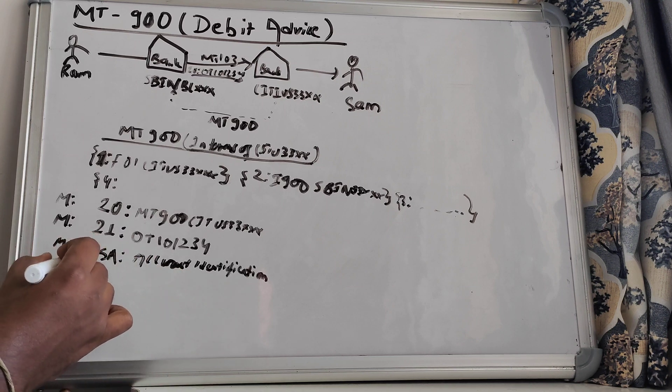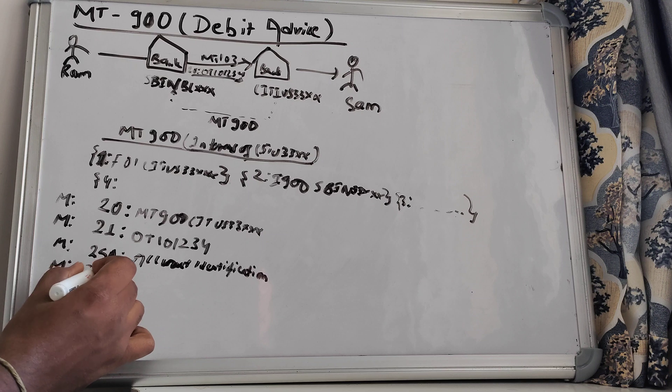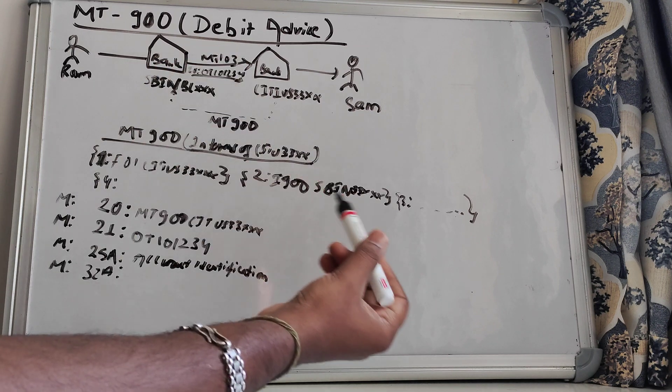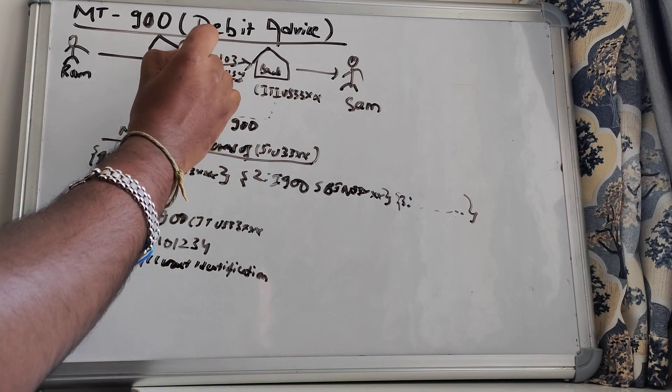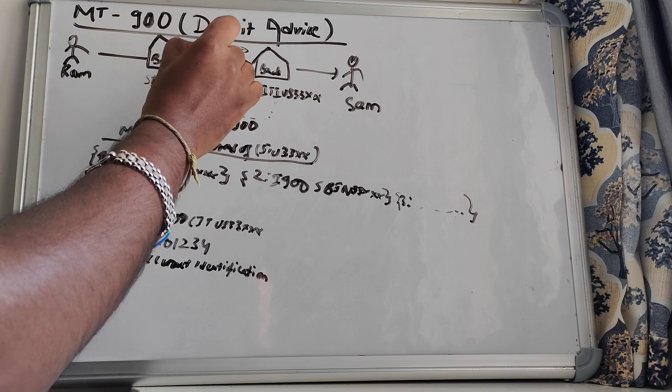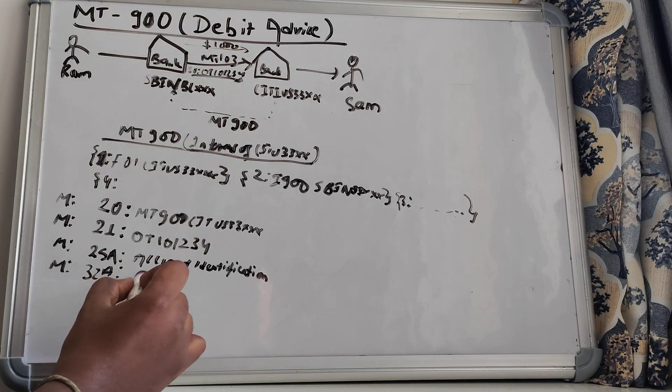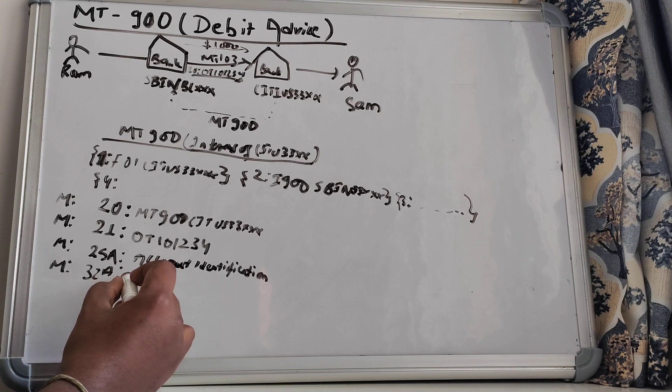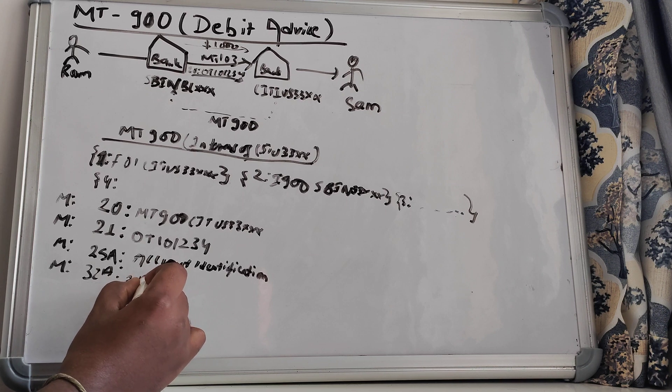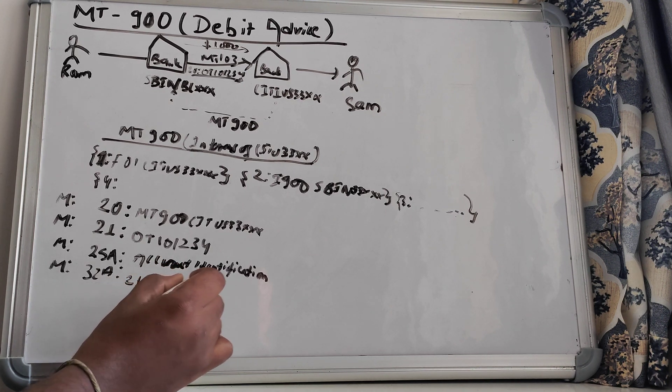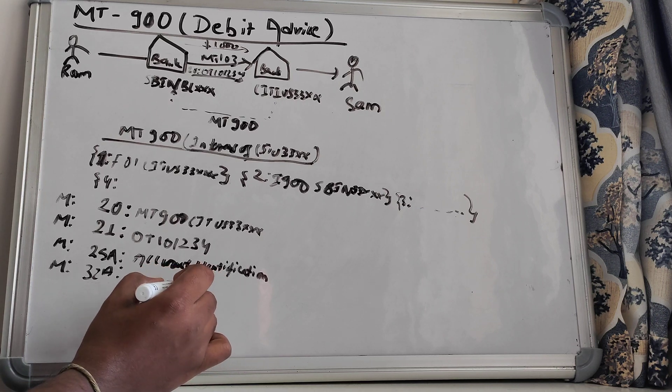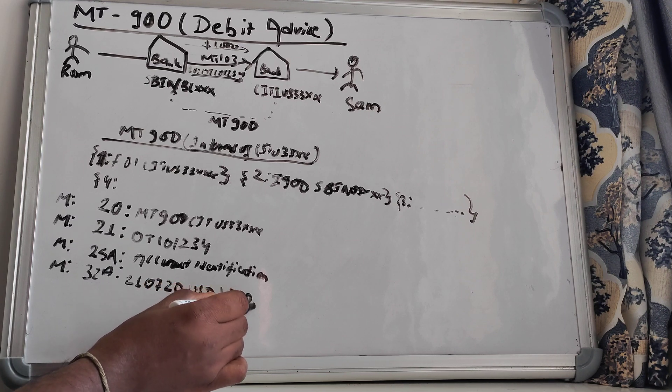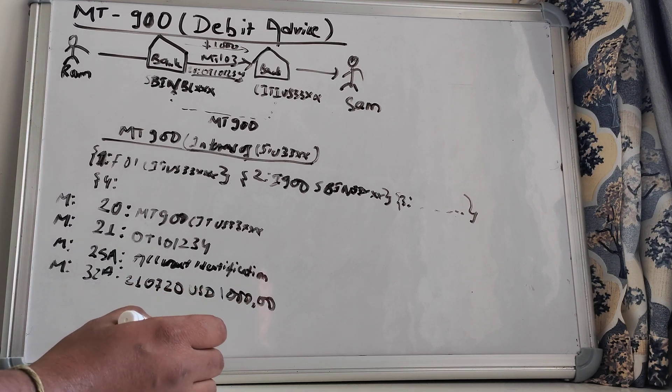And then we have another mandatory tag, that is 32A, which is again the value date, currency, and the amount. Let's say if $1,000 has been sent - the instruction was for $1,000 - and this will be, let's say for today's date we will take 210720, USD, and $1,000.